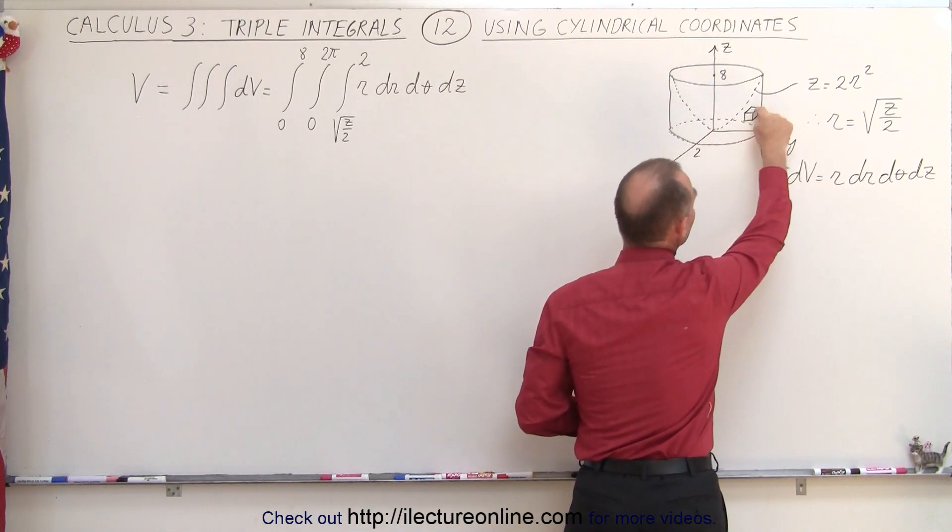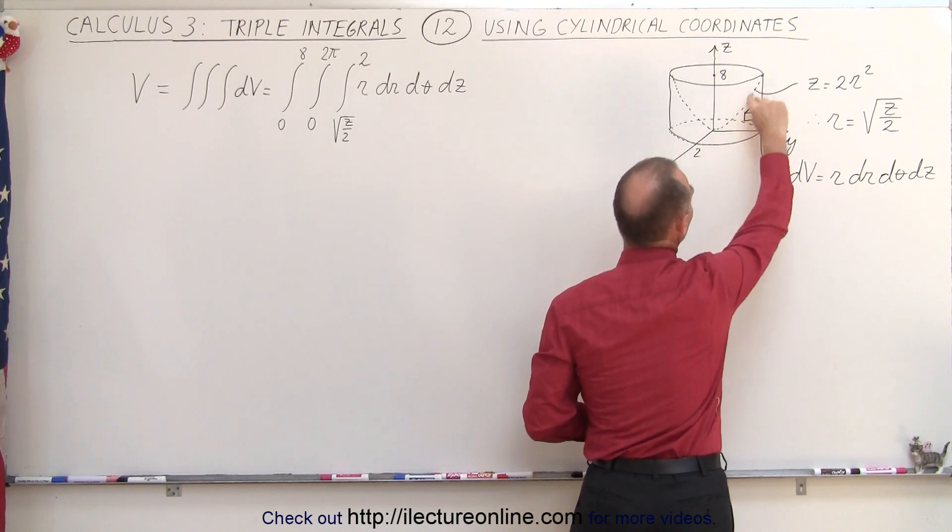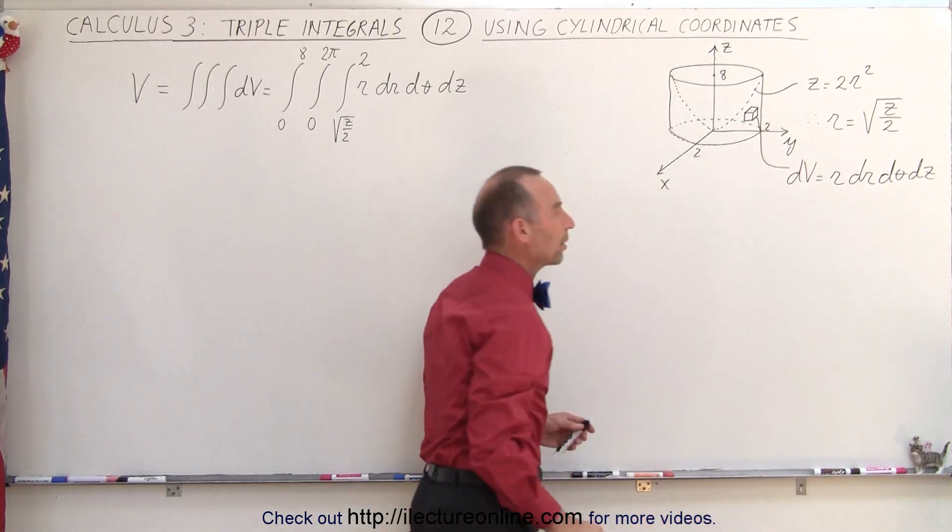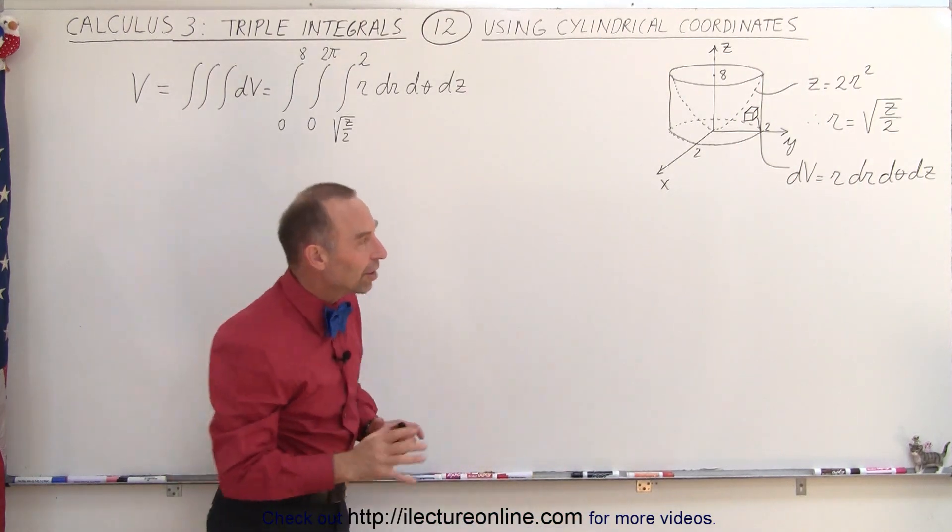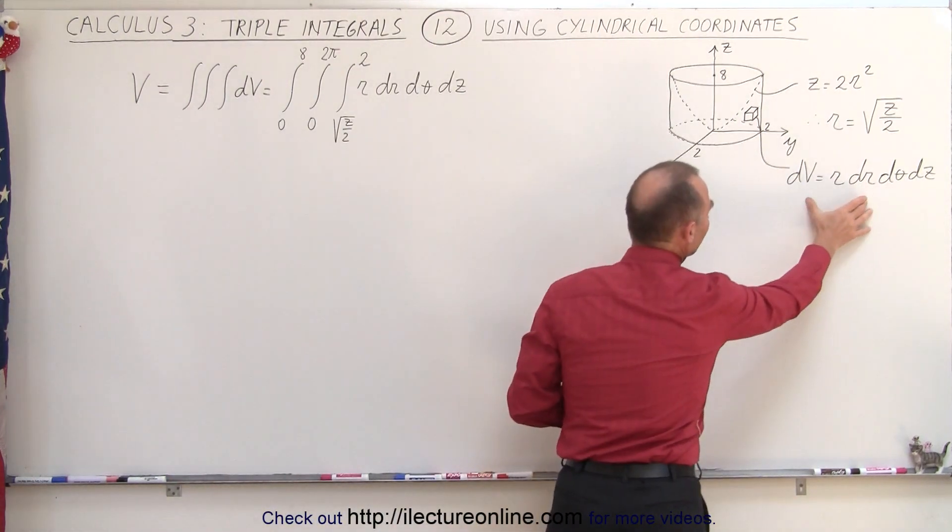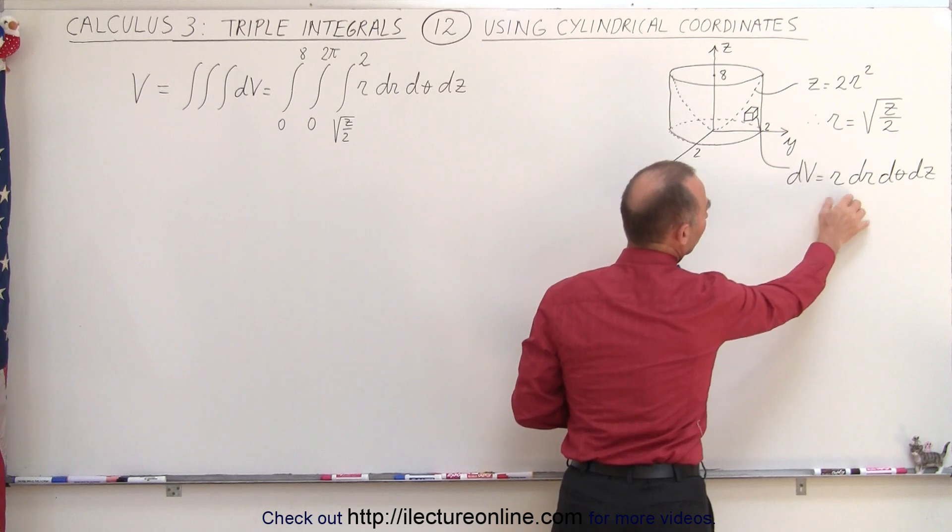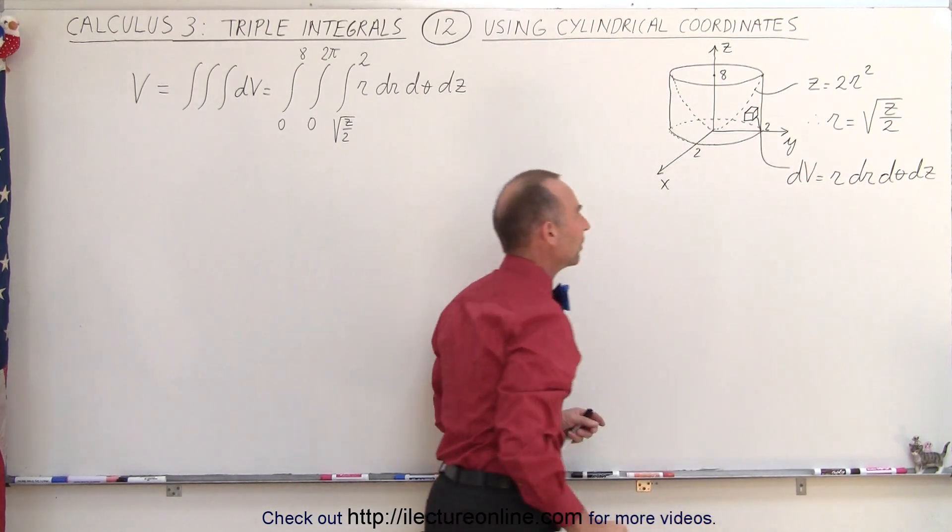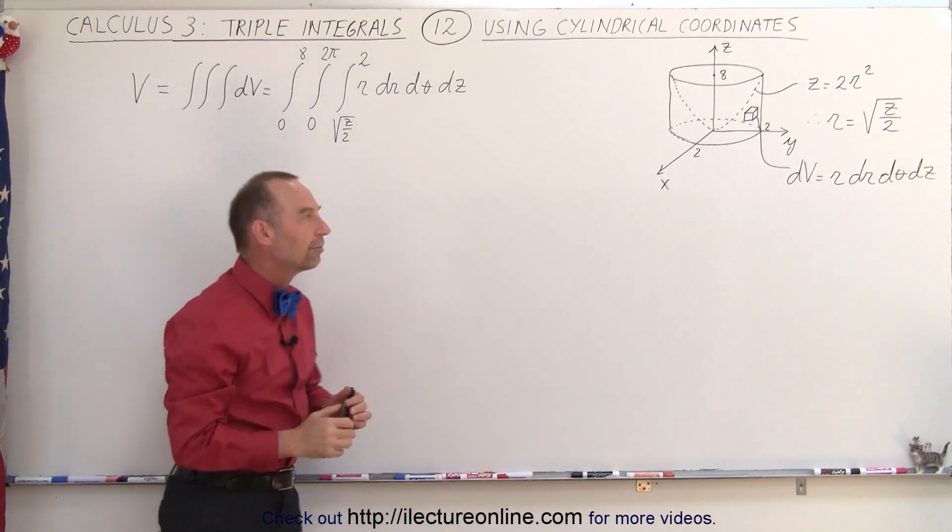The relationship between the radius and the height here of this edge of the bowl, it's a paraboloid, z equals 2r squared. And we're going to take the volume this time as being the volume using cylindrical coordinates of r, dr, dθ, dz, so a small volume element, and we're going to integrate over that volume.